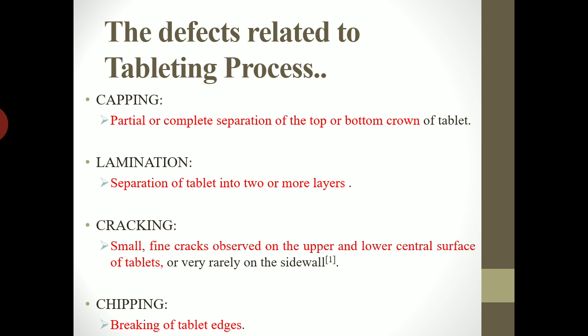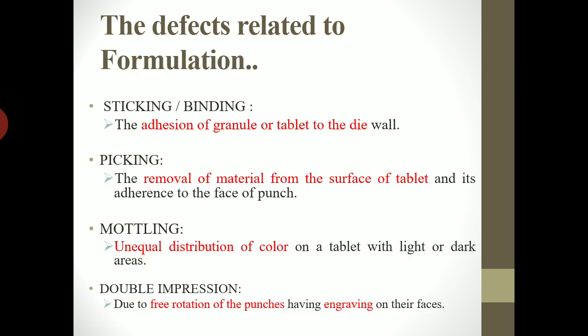Next is sticking or binding. As the name suggests, there will be sticking or binding of the granules or tablet parts to the die wall. Next is picking — picking is the removal of material from the surface of the tablet and its adherence to the surface of the punches. So sticking occurs because of dies, and picking occurs because of punches. This difference between sticking and picking should be remembered.